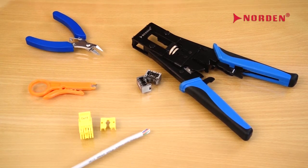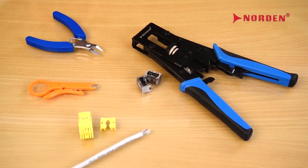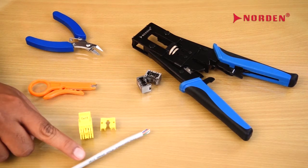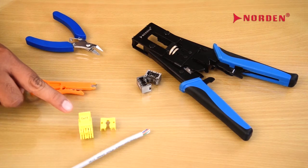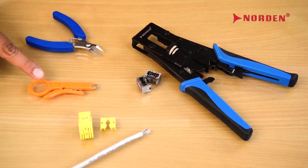Here are the components required: CAT6 cable, CAT6 punch down keystone jack, Norden termination tool, cable jacket stripper, and cable cutter.